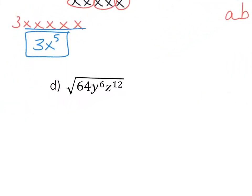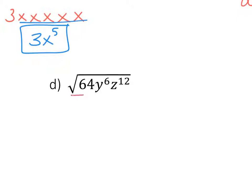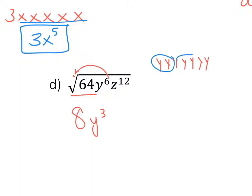Next one — I'm going to do it without factoring out. The square root of 64 is 8. Then 6 divided by 2 is 3, so if I write out 6 y's and take them out in groups of 2, I have y cubed. And z to the 12th is going to be 12 divided by 2, which is 6, so it's z to the 6th.